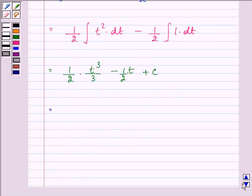Further, it can be written as 1 by 6 t cube minus 1 by 2t plus c.